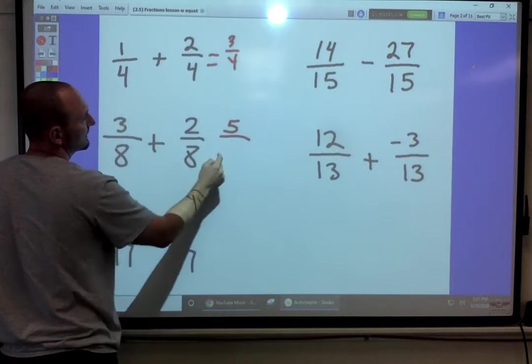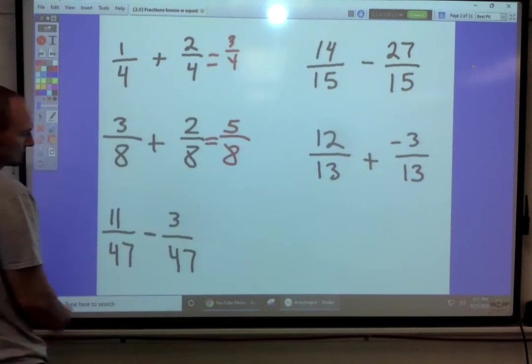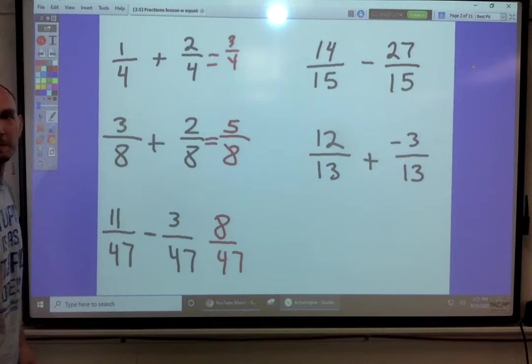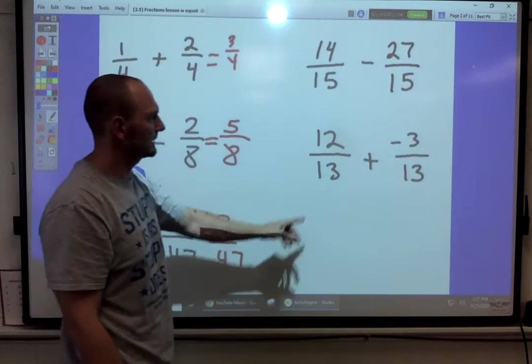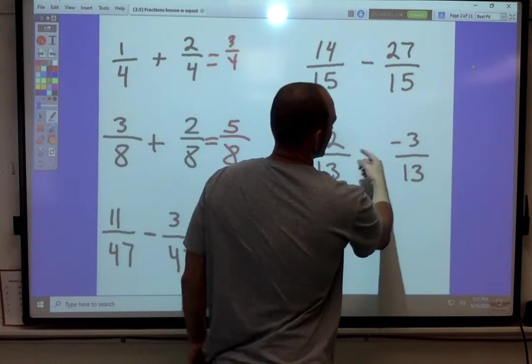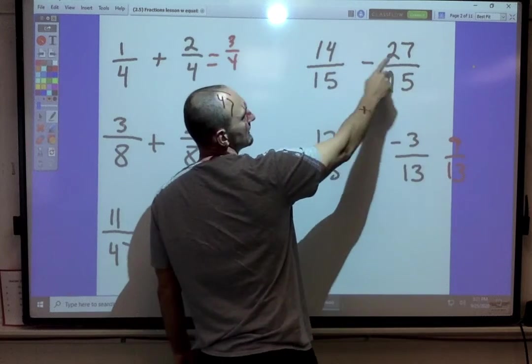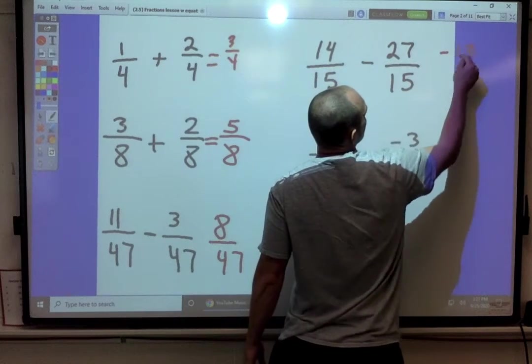Three plus two, five-eighths. Eleven minus three, eight forty-sevenths. Pretty simple. We've just got to make these the same.